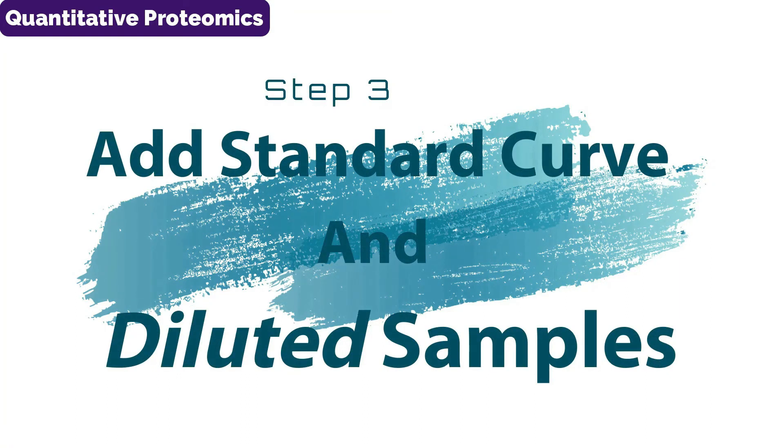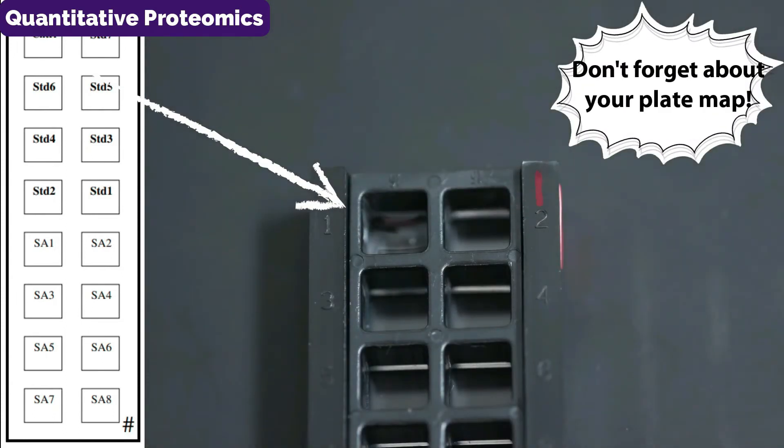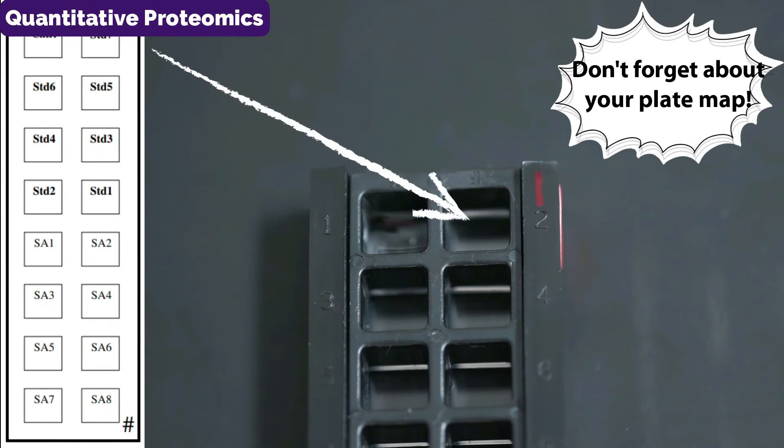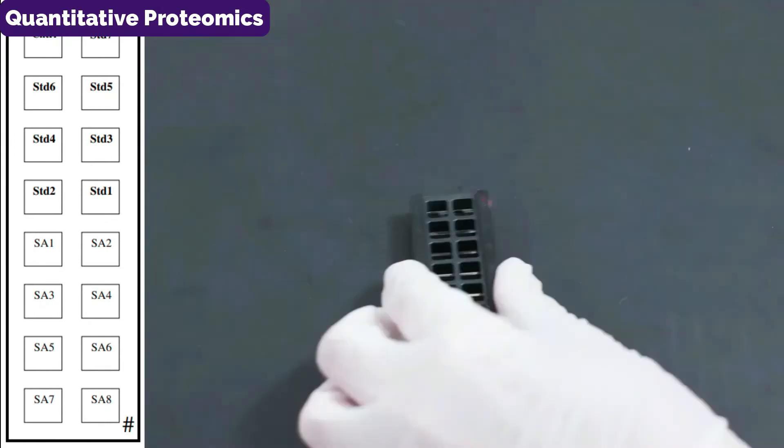Once that wash buffer has been removed, you can add your standard and samples. Don't forget to add them according to your plate map to ensure your data is accurate. Seal the slide and incubate for one to two hours.